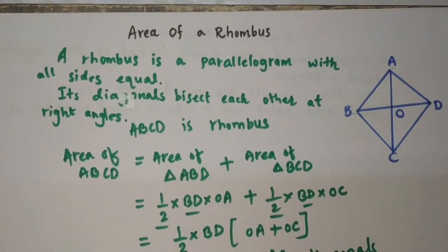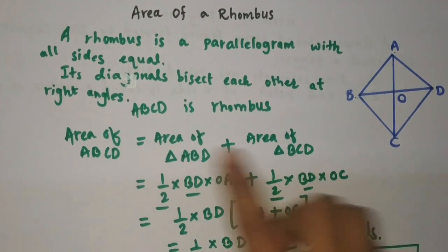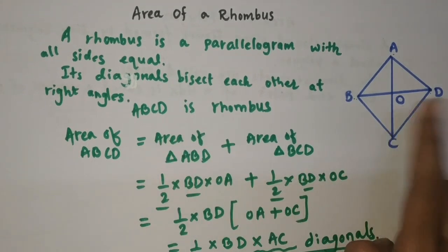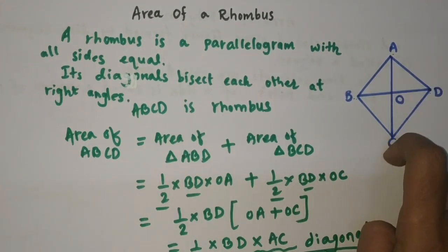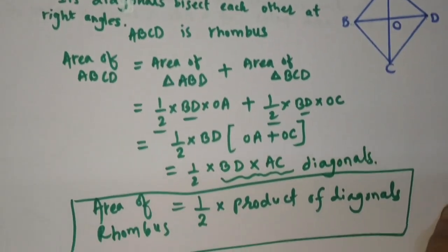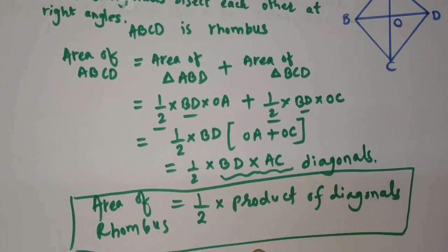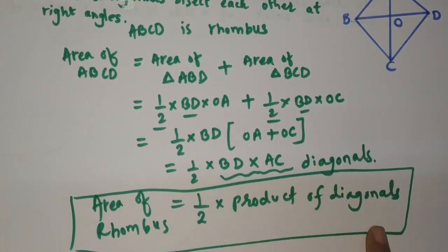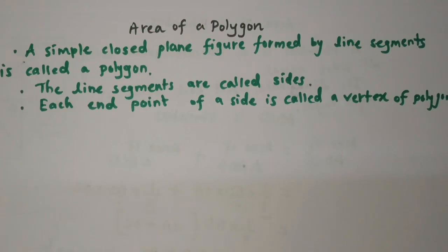So in this way we have obtained the formula to calculate the area of a rhombus. We started with the areas of two congruent triangles and reached the result: half of the product of its diagonals.